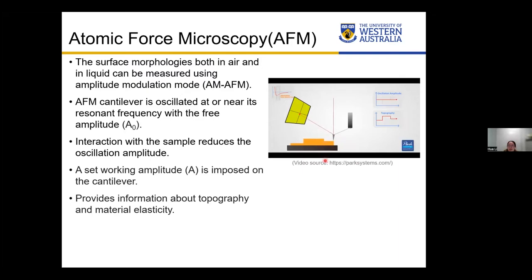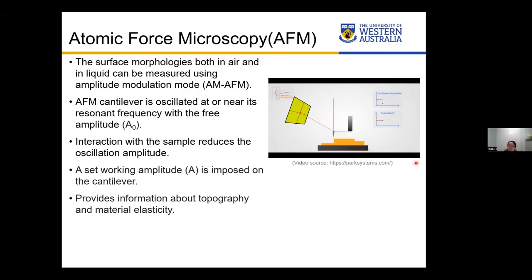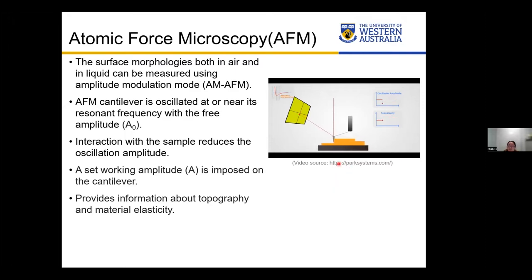As the cantilever moves close to the surface, the interaction with the sample reduces the oscillation amplitude. A set-point amplitude, lower than the free amplitude in air, is imposed on the cantilever to guide it to move up and down to map surface morphology. We can also achieve other information such as elasticity. This is achieved by a feedback loop that constantly readjusts the average tip-to-sample distance. That is how AFM works.